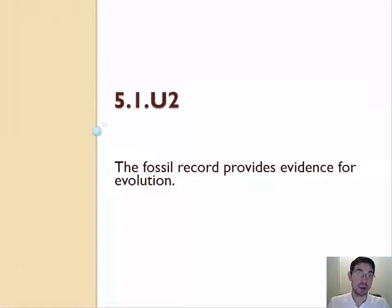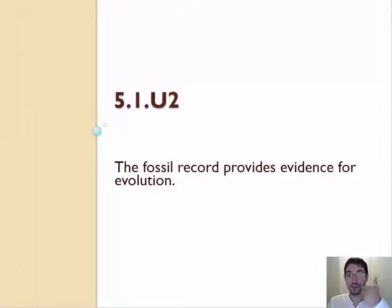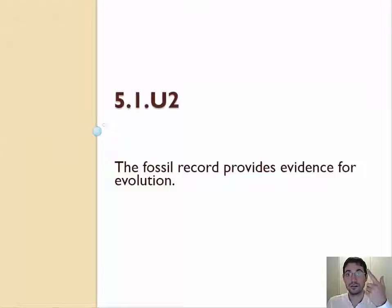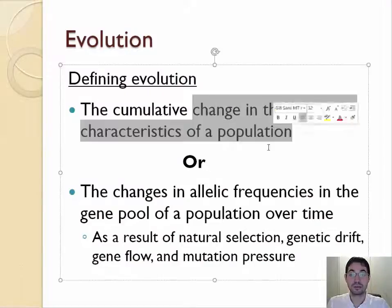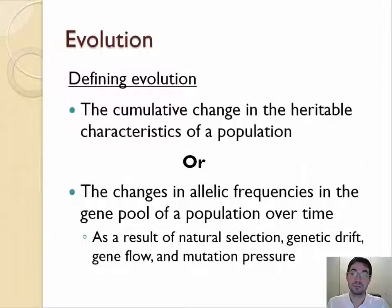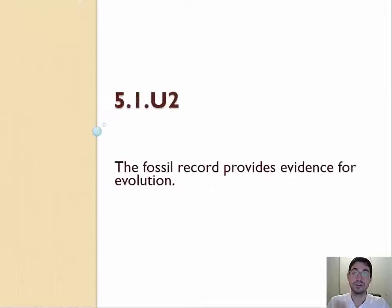In the fossil record, you can actually find that common ancestor. The fossil record allows us to find animals that are between animals that exist today, and also animals and plants that no longer exist — that are extinct. Both of these things show that there has been a change in the heritable characteristics of populations over time, so evolution happens. The fossil record does show evidence for evolution.